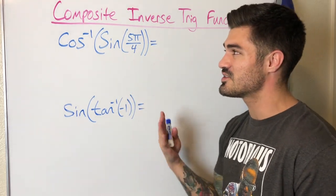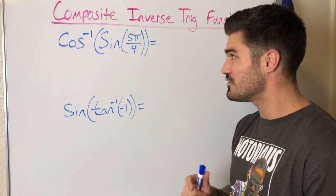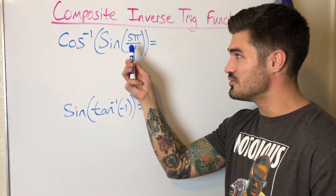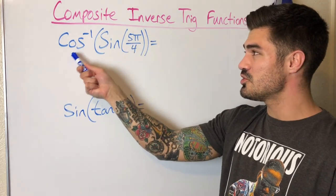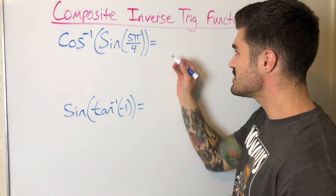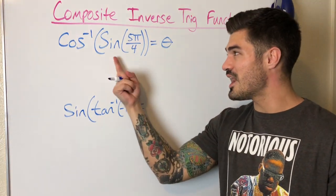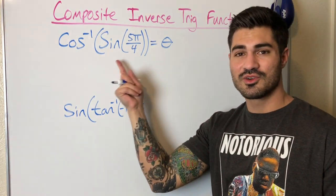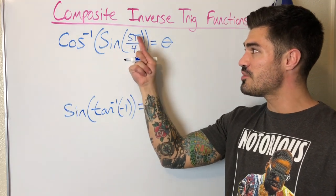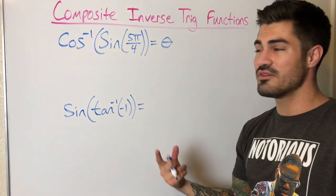Cosine inverse is my outer function and sine is my inner function. Sine of 5π/4 is going to give me some value, and I'm going to take the cosine inverse of that value and get some angle. So this is an angle I'm looking for — theta basically. I know this is on the unit circle, so I can evaluate this: replace sine of 5π/4 with whatever value it is, then find the cosine inverse of that value.